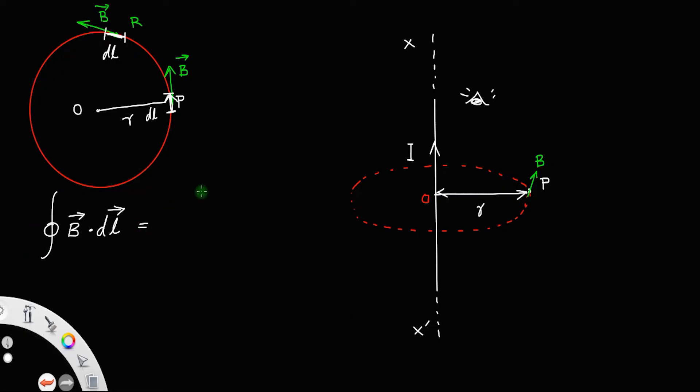This is equal to closed integral. See the direction of B is in this direction along the tangent, also DL is in the same direction. So, the angle between them is 0. So, we can write it will be B DL cos 0 degree. So, this will be integral B DL.